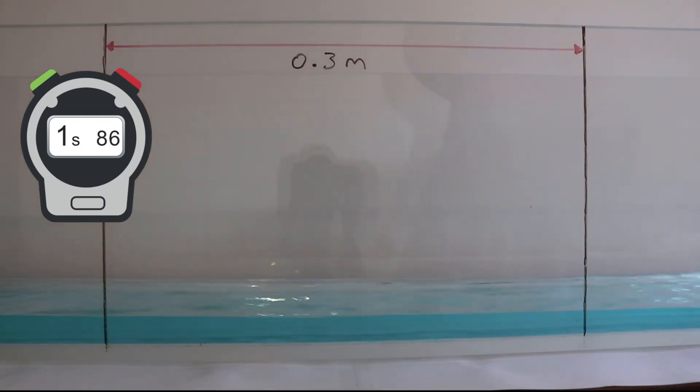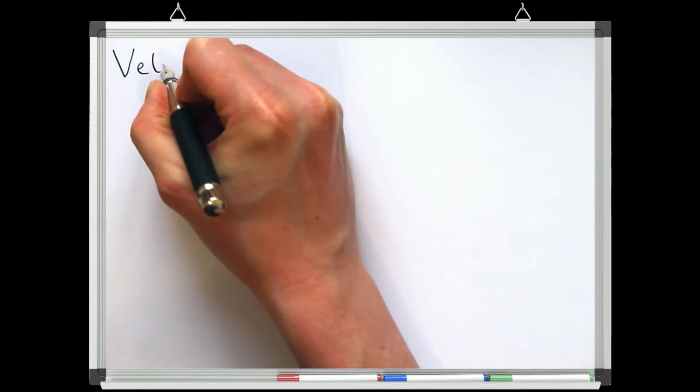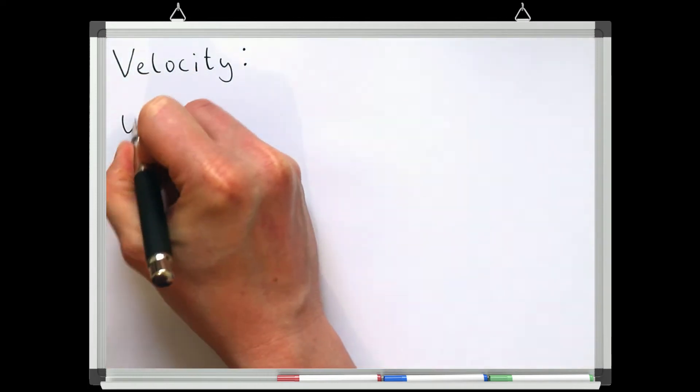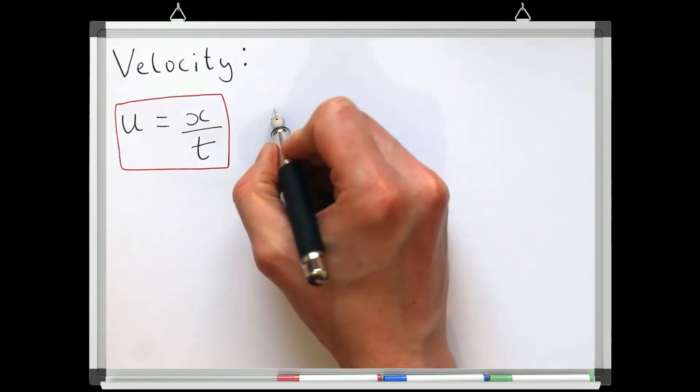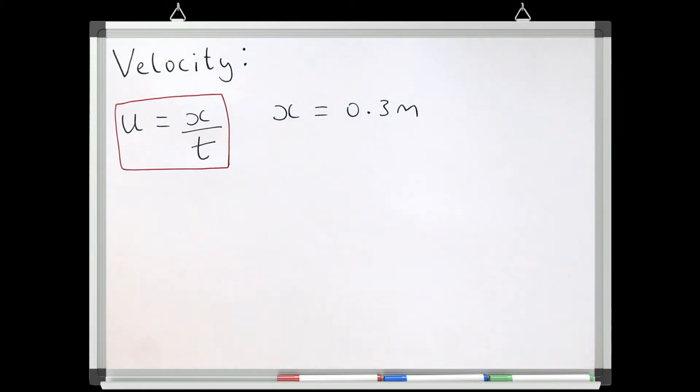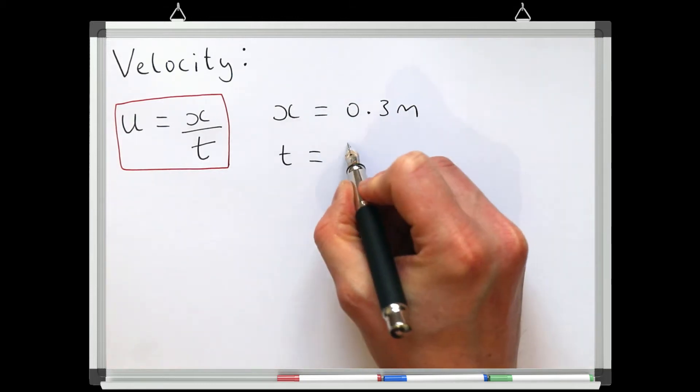In this example, it took approximately 2 seconds for the object to travel 0.3 meters. So if we know the velocity is distance travelled over time, and the object travelled 0.3 meters in 2 seconds,